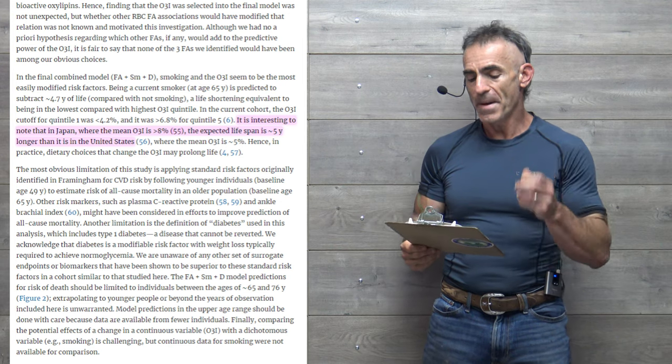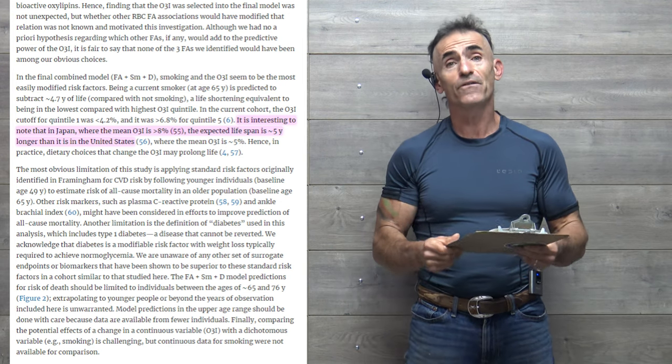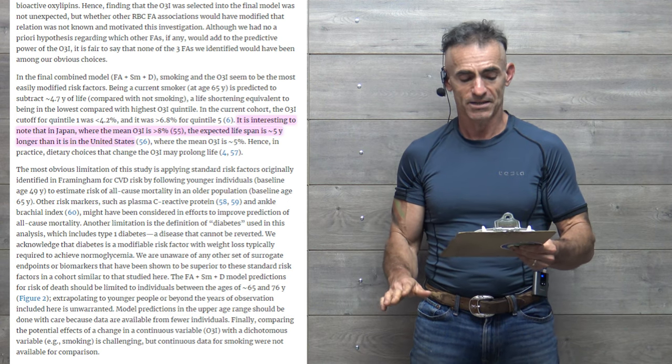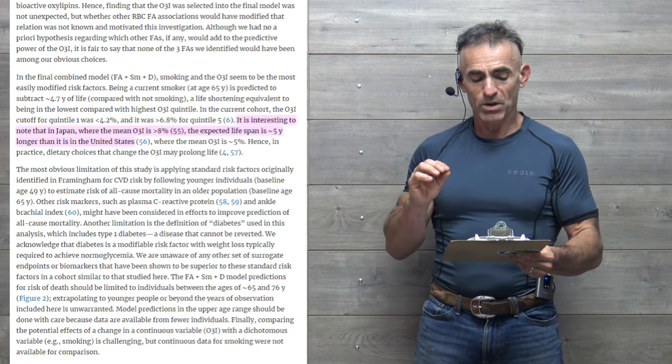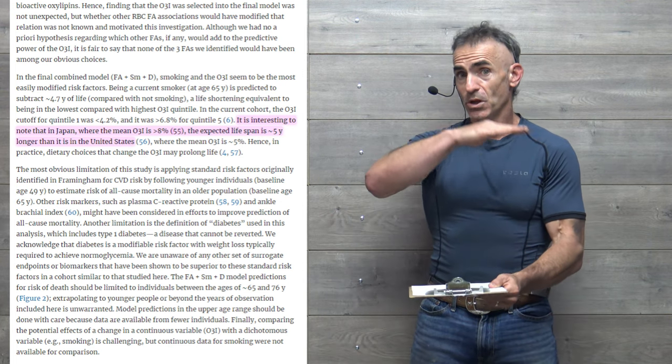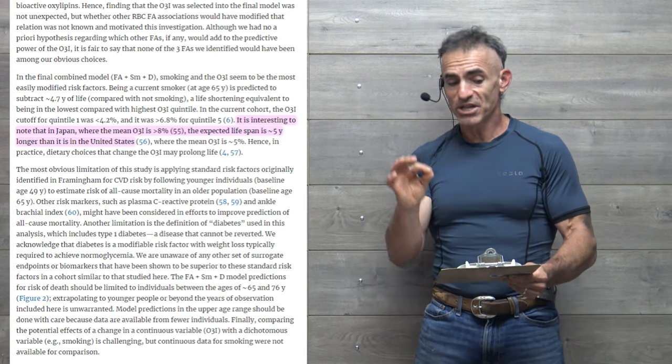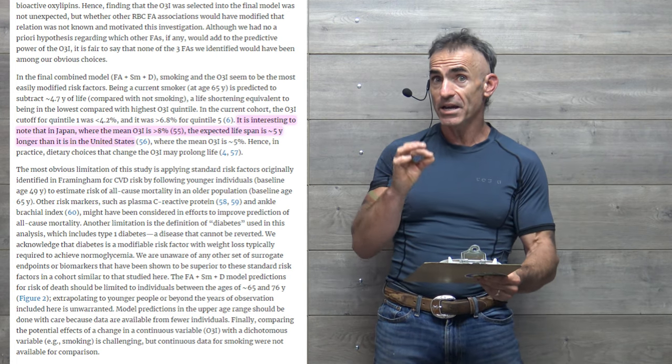In the current cohort, the omega-3 index cutoff for quintile one was less than 4.2 percent and it was greater than 6.8 percent for quintile five. So the difference between the lowest intake and the highest intake. You see what I mean by that one percent change, which they alluded to in the very beginning of the article.